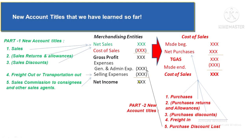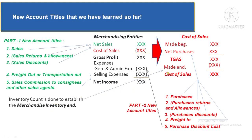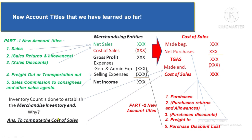Now, why do we need to do an inventory count? We do it to establish the merchandise inventory ending balance. We need this to get the cost of sales. Merchandise inventory beginning is also needed for cost of sales — but it is simply the merchandise inventory end of the previous period. So if you understand how to compute merchandise inventory end, there's no need to worry about merchandise inventory beginning.